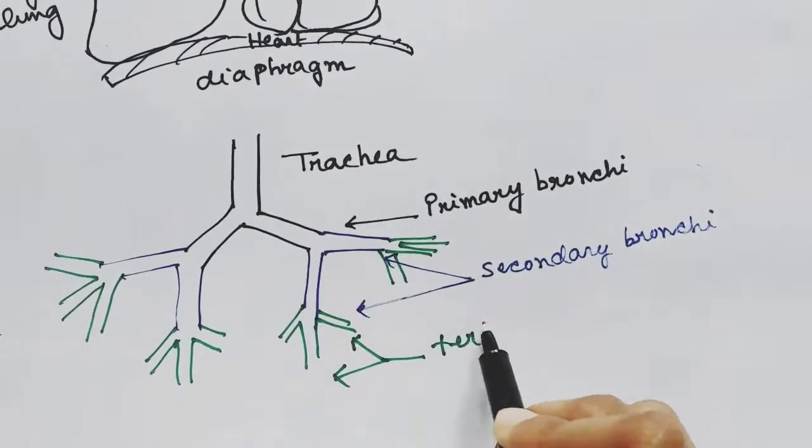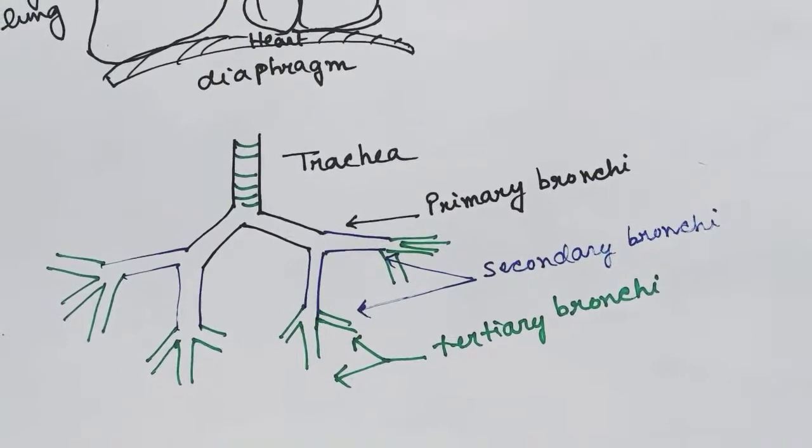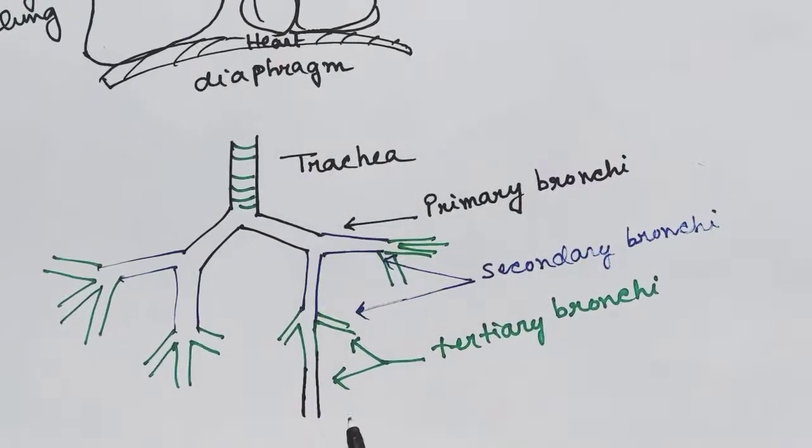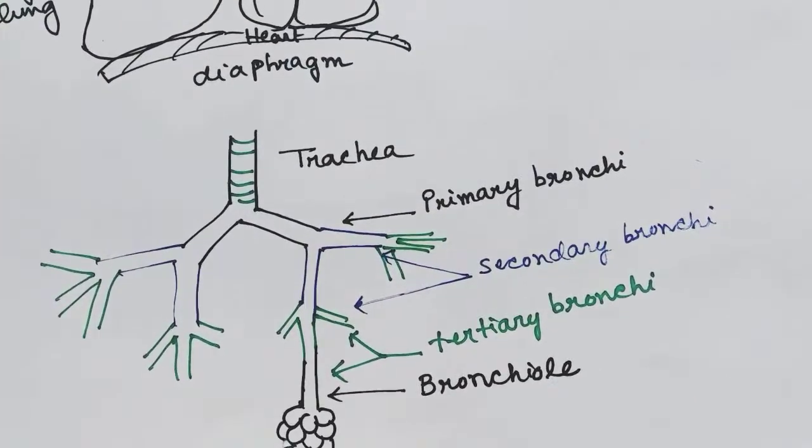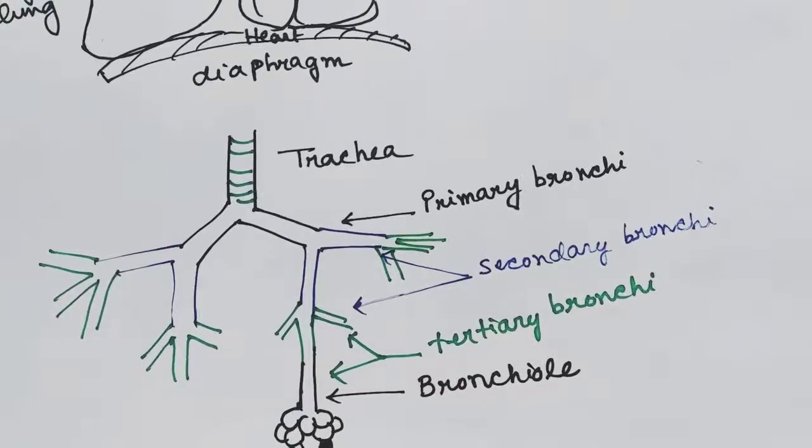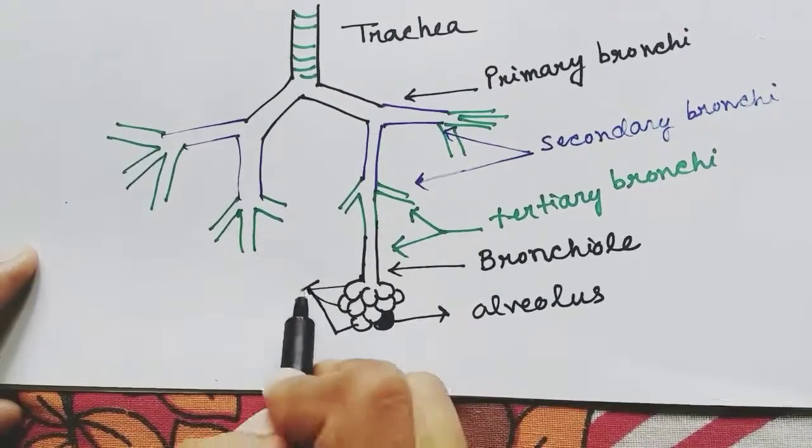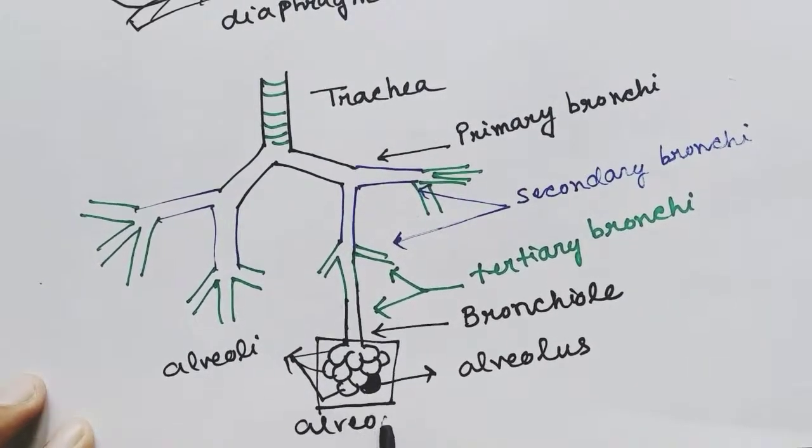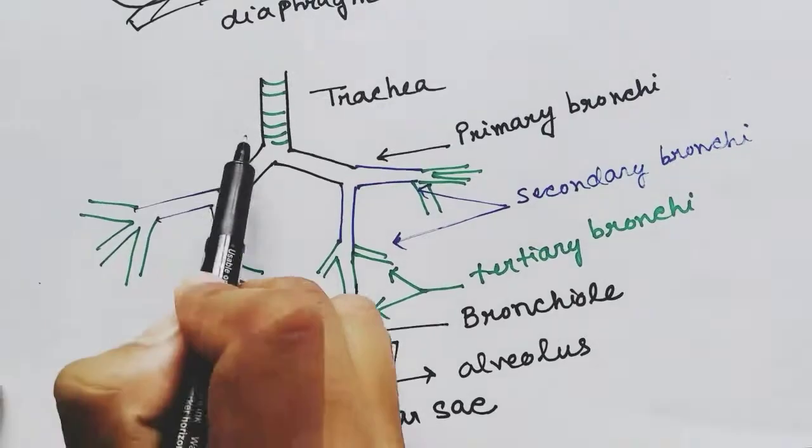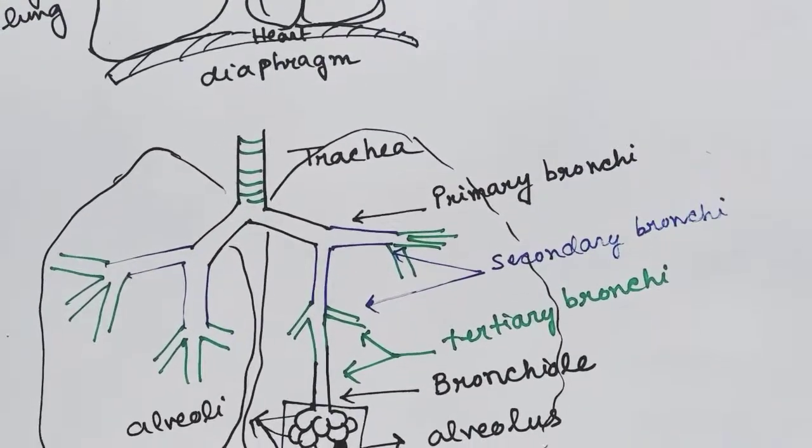The tertiary bronchi can also divide again or form the alveolar sac. Before entering the alveolar sac, the tube is called bronchiole. This is the alveolar sac, and each round structure is called alveolus, and many of the alveolus form the alveolar sac, all happening inside the lung.